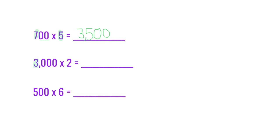For the next one, we have 3,000 times 2. So the basic fact would be 3 times 2, which is 6. And then we have 3 zeros to add. So 3,000 times 2 equals 6,000.